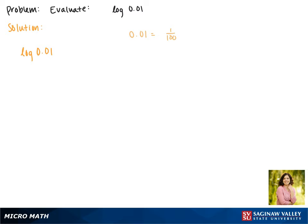So here we're taking the log of 1 over 100. When the base of a log is not written we assume that it's 10. So what this is asking is 10 raised to what power will give us 1 over 100?